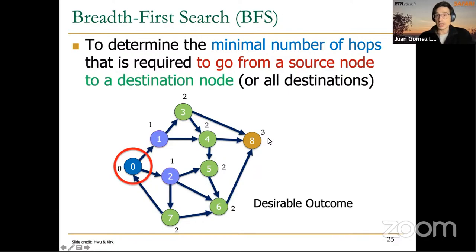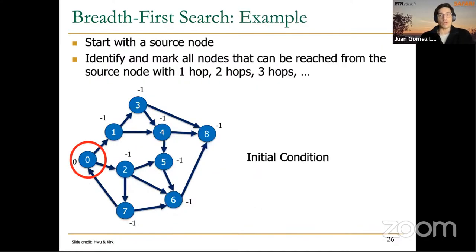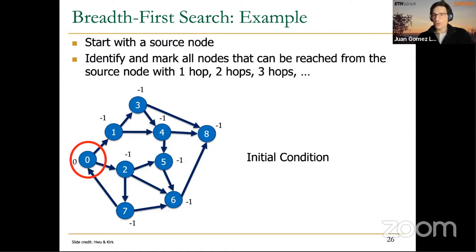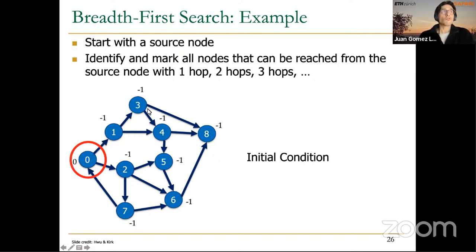How do we execute this algorithm? It's an iterative algorithm. We start with a source node and go iteration after iteration, visiting nodes at a certain distance: one hop, two hops, three hops, and so on. When we start, we only know the distance to the source node — the distance from the source to itself is 0. For the rest of the nodes, the distance is unknown, so we mark them with infinity or -1 as an invalid value.